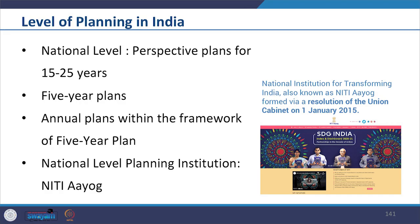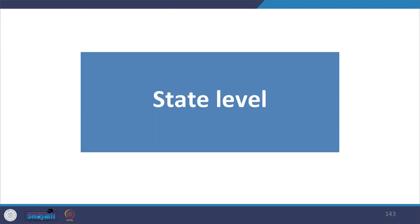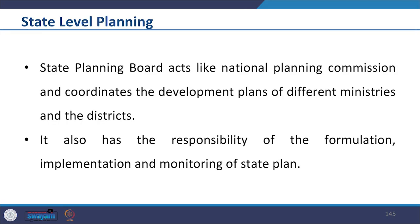The Planning Commission used to formulate three types of plans: perspective plan for 15 to 25 years, five-year plans, and annual plans within the framework of the five-year plan. Now we have NITI Aayog. The next level is state-level planning. The State Planning Board acts like the national Planning Commission and coordinates the development plans of different ministries and districts. It also has the responsibility of formulation, implementation and monitoring of the state plan.